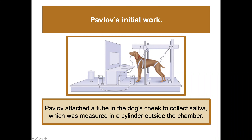In Pavlov's initial work, he attached a tube in the dog's cheek to collect saliva, which was measured in a cylinder outside of a chamber.